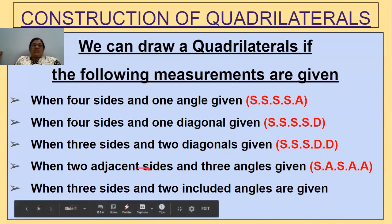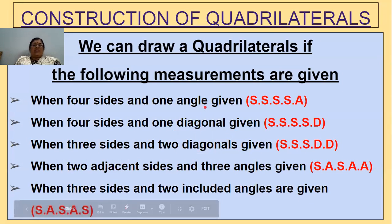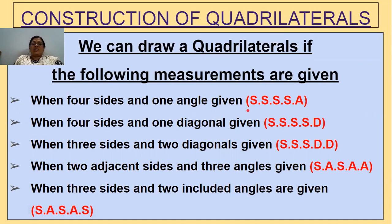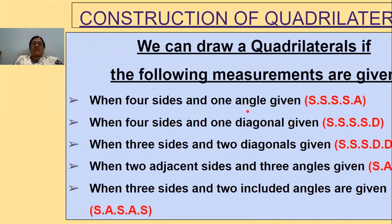When 2 adjacent sides and 3 angles are given, or when 3 sides and 2 included angles are given — when you observe all these cases, we need 5 measurements to construct a quadrilateral.